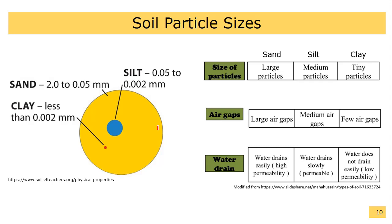Water drains easily through sand, hence sandy soil has high permeability. Water drains slowly through silt, so a silty soil has lower permeability than sandy soil. Water does not drain easily in clay. Clay soils have very low permeability.